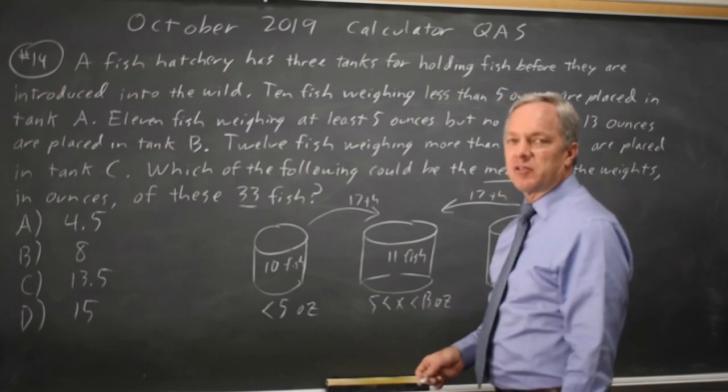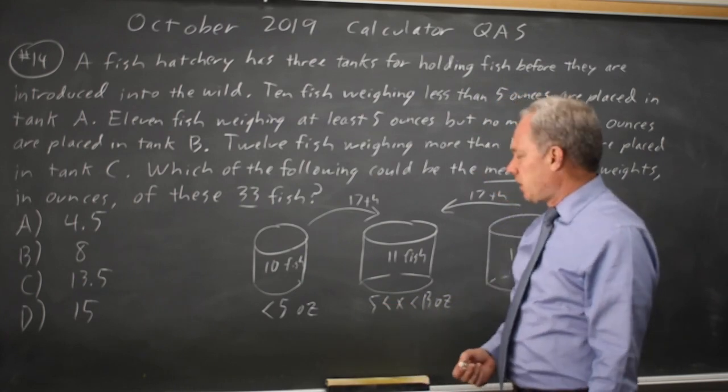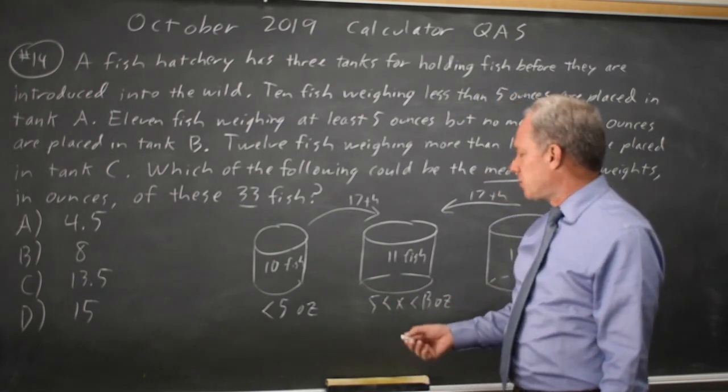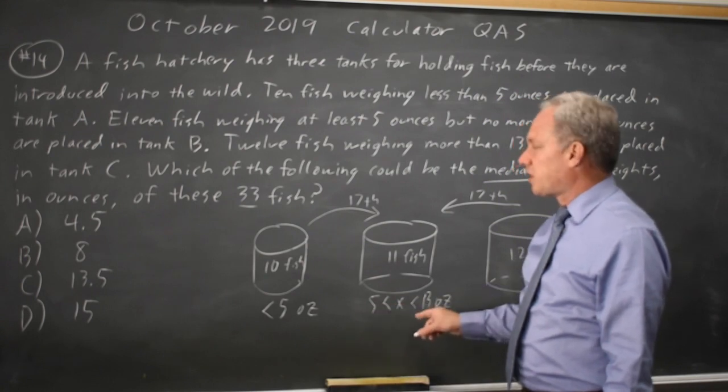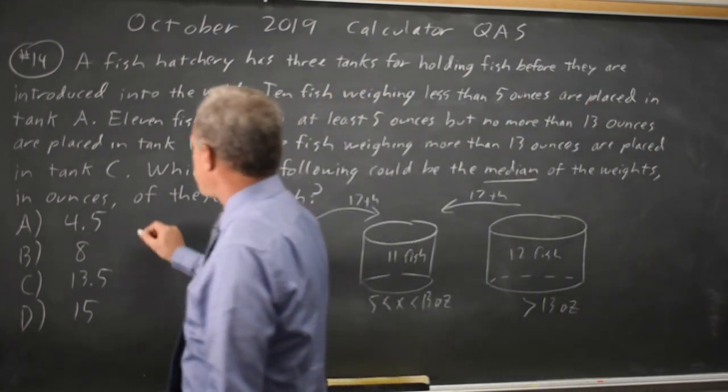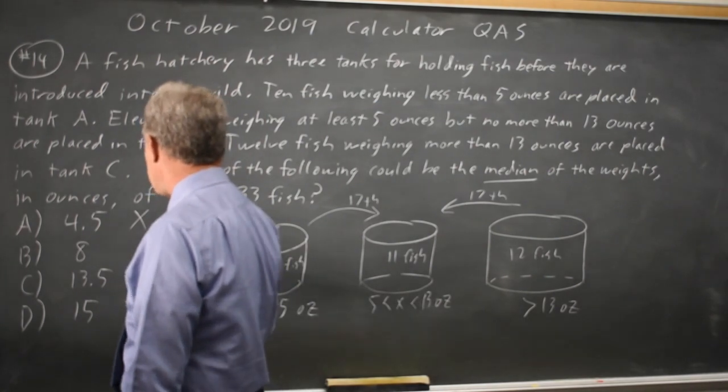So the median value has to be a fish in this middle tank, and even without knowing their values, you know that it has to be a number from 5 to 13. So 4½ doesn't work, 13½ doesn't work, 15 doesn't work.